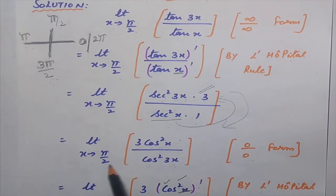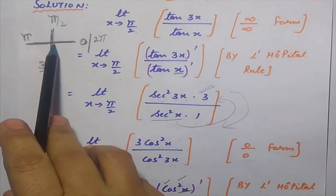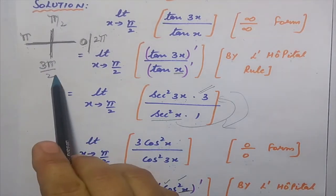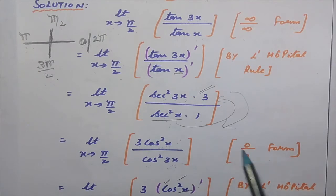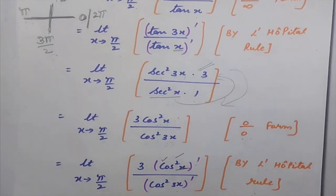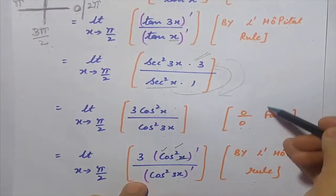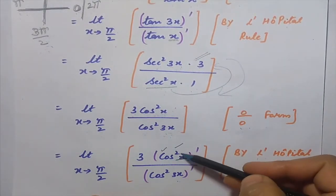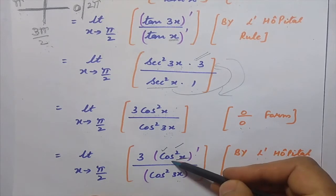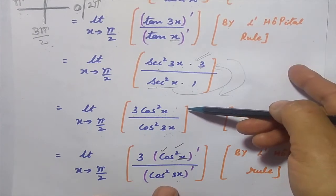When we now approach π/2, cos²(π/2) equals zero and cos²(3π/2) also equals zero, giving a 0 by 0 form — which is again an indeterminate form. So we apply L'Hôpital's rule a second time, differentiating numerator and denominator again. These are compositions involving squared cosines and angles, so we differentiate degree first, then the trig ratio, then the angle.